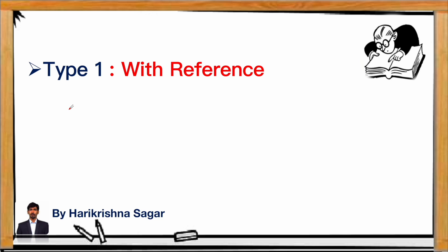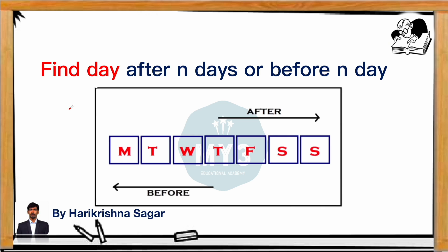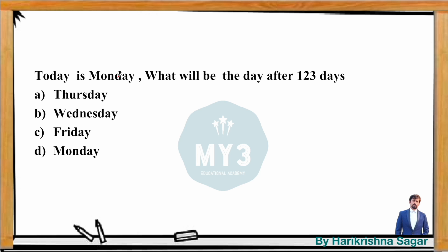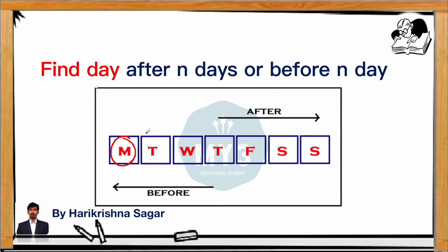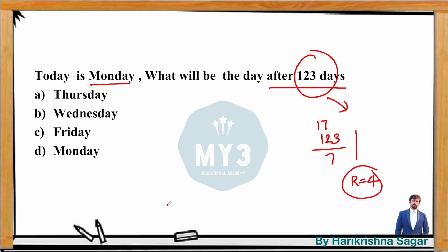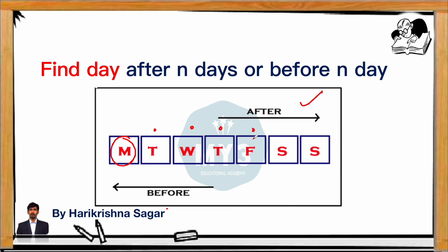Now we'll see questions based on odd days using a reference model. They give a specific day and ask what day it will be after or before a certain number of days. For example: if today is Monday, what will be the day after 123 days? First, find odd days in 123: 123 divided by 7 gives remainder 4. Since they say 'after' 123 days, that means future — move forward by 4 days from Monday: 1, 2, 3, 4 — the answer is Friday.